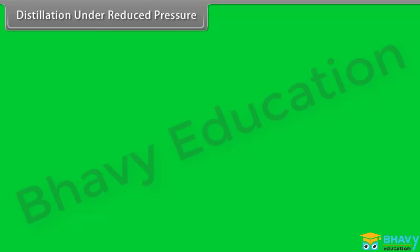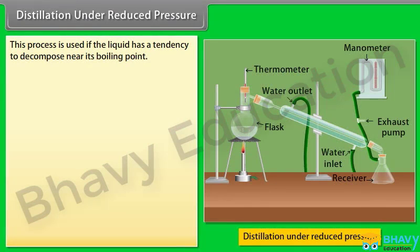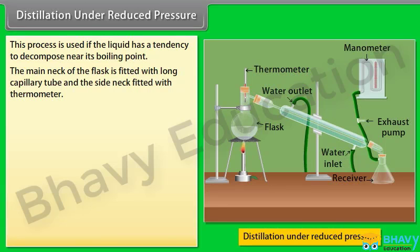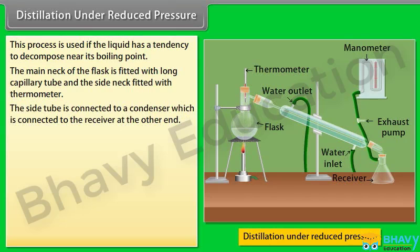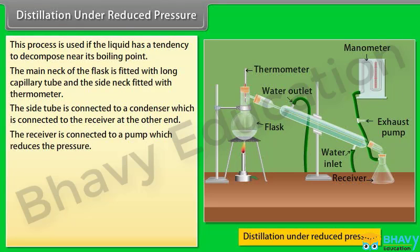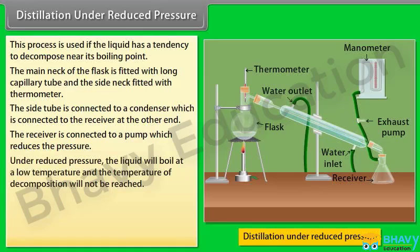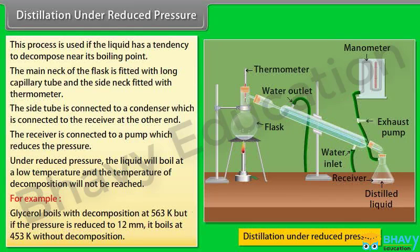Distillation under reduced pressure: This process is used if the liquid has a tendency to decompose near its boiling point. The flask is fitted with a long capillary tube and a thermometer, connected to a condenser and receiver, which is connected to a pump that reduces the pressure. Under reduced pressure, the liquid boils at a lower temperature and the decomposition temperature is not reached. For example, glycerol boils with decomposition at 563 K, but if the pressure is reduced to 12 mmHg, it boils at 453 K without decomposition.